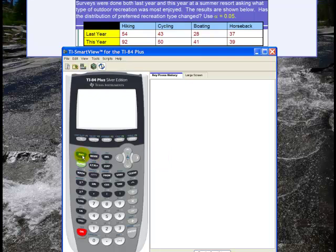I use second matrix and then I go to edit so that I can put my data in and hit enter. We have two rows and four columns of numbers. So two is fine and then four columns.